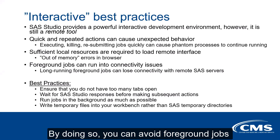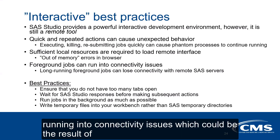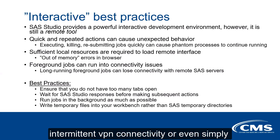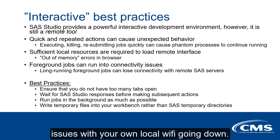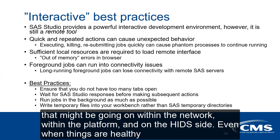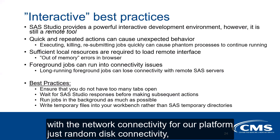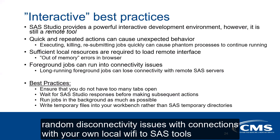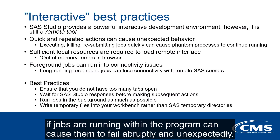By doing so, you can avoid foreground jobs running into connectivity issues, which could be the result of intermittent VPN connectivity, or even issues with your own local Wi-Fi going down. This is separate from any known issues that might be going on within the network, in the platform, and on the HIT side. Even when things are healthy with network connectivity for our platform, random disconnectivity or issues with your local Wi-Fi can cause jobs to fail abruptly and unexpectedly.